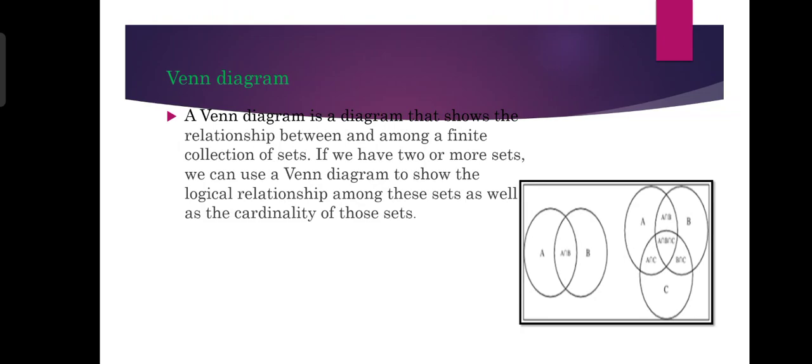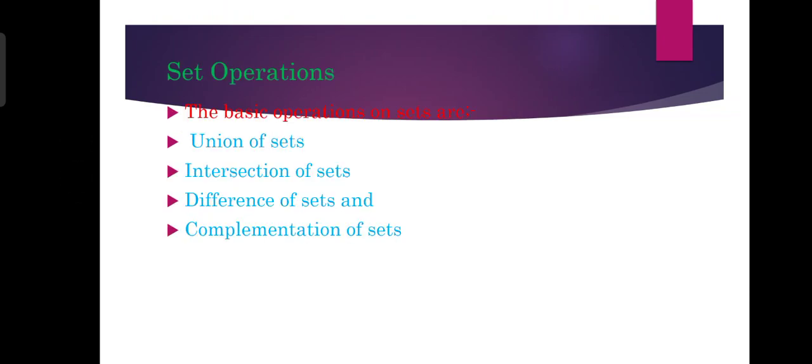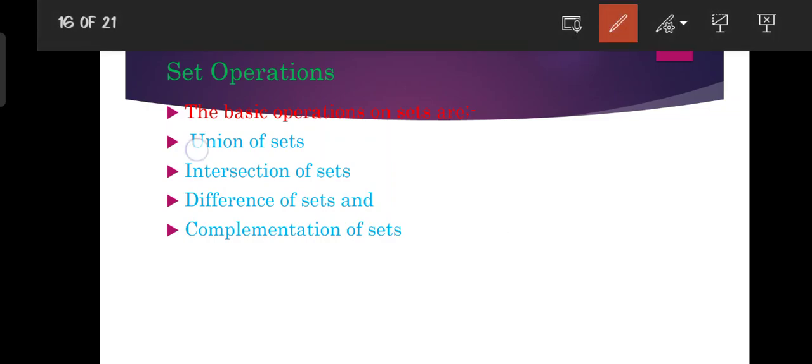You can use a method called Venn Diagram to represent logical relationships among sets, using operations such as A-Union B, A-Intersection B, and A-Complement. The basic operations of a set include Union of the sets, Intersection of the sets, Difference of the sets, and Complementation of the sets.